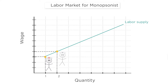Assume the hospital wants to hire a second nurse — this creates a problem. The hospital can't give the new nurse a higher wage than the first nurse, because it would create perceived unfairness. As a result, the marginal cost of hiring the second nurse is higher than that of hiring the first nurse. The second nurse's marginal cost is not only the higher wage you have to pay him, but the extra wage you also have to pay the first nurse. It's a poisoning effect, just like a monopolist faces in the market for goods — to sell one more unit, the monopolist lowers the price, but that lower price applies to all previous units as well. The same idea holds for a monopsonist hiring workers.